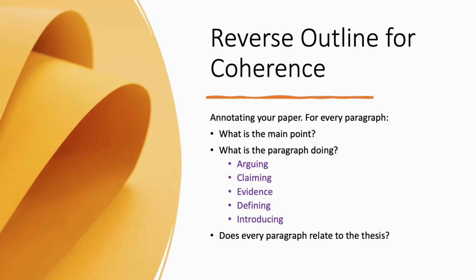For coherence, you could also use the reverse outline. For each paragraph, you're not only asking what the topic of the paragraph is — you're also asking what the paragraph is doing. Is it arguing, claiming, providing evidence, defining? Take a look at the sequence of paragraphs to make sure they make sense. Do we really want to be arguing before we're defining? We might want to define first and then argue after — that might be a more logical sequence.